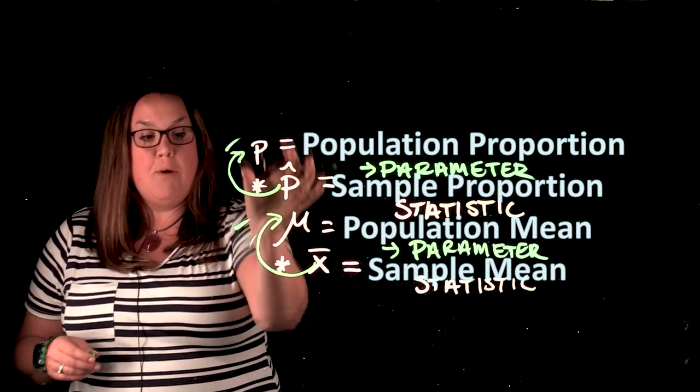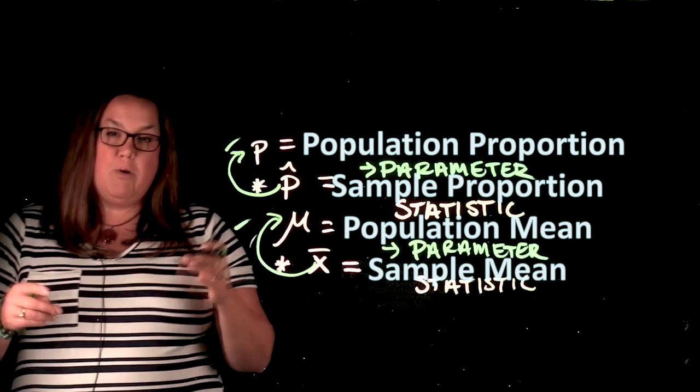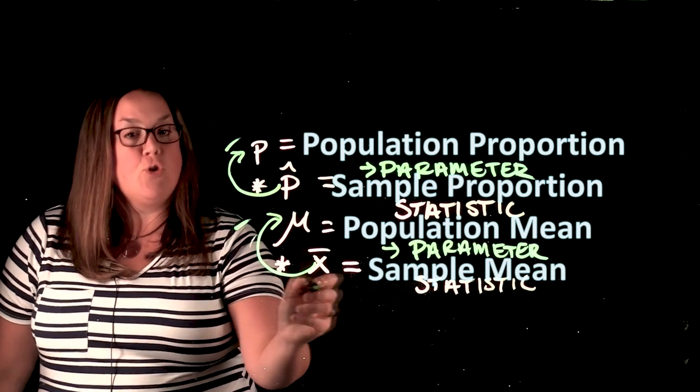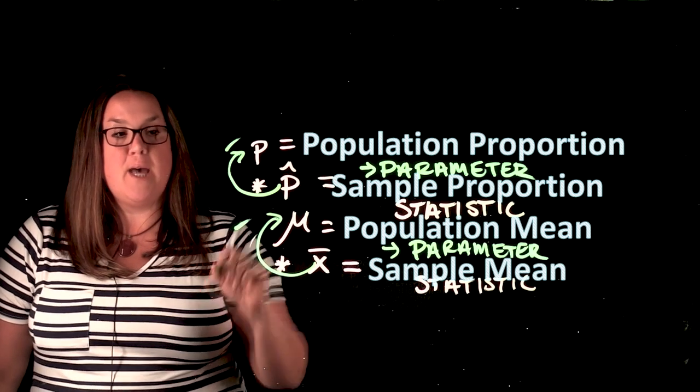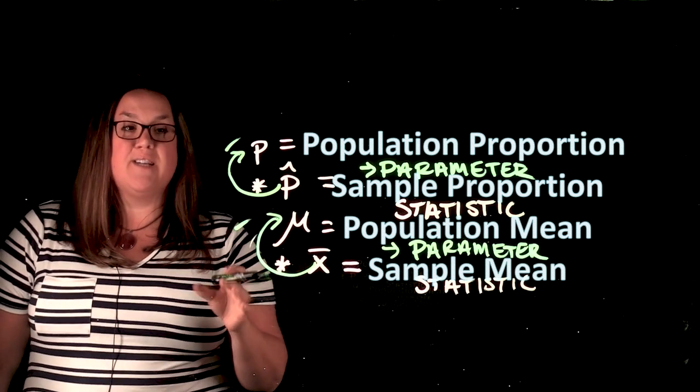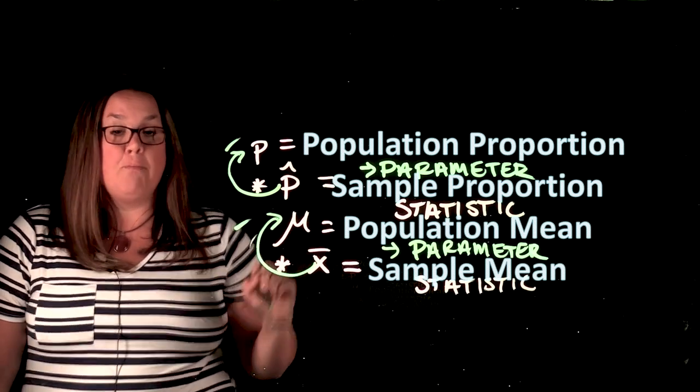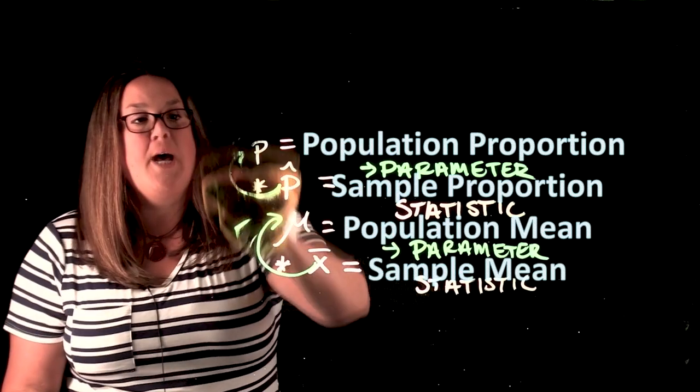Now, we don't know what p or mu are. But when we talk about sampling variability, we're going to kind of know them so that you can see how good of a job x bar does estimating mu and how good of a job p hat does estimating p because it'll help us to know how to measure the variability amongst those p hat values or amongst those x bar values. Now, I just want to emphasize this one more time.